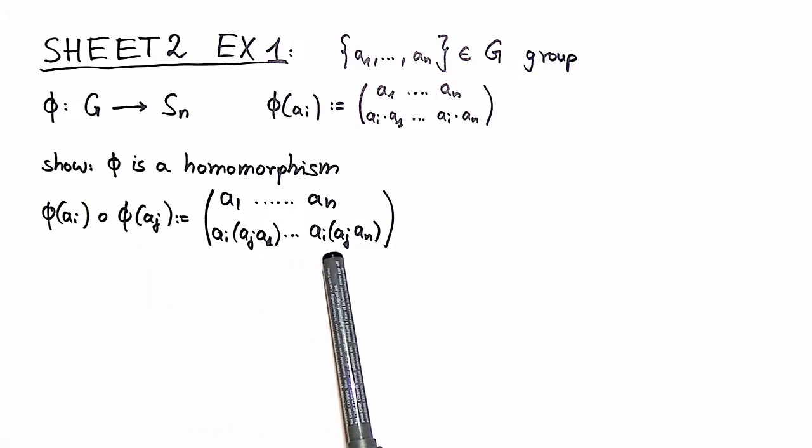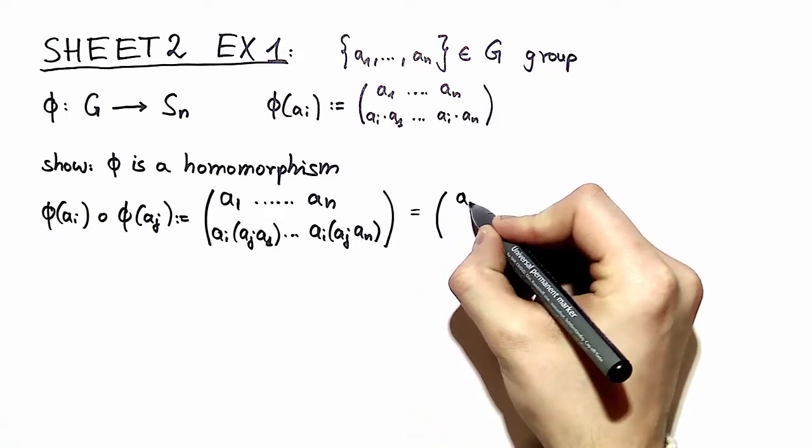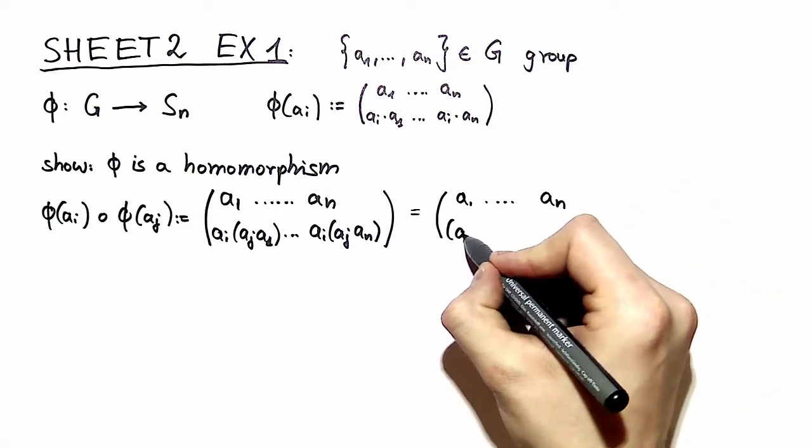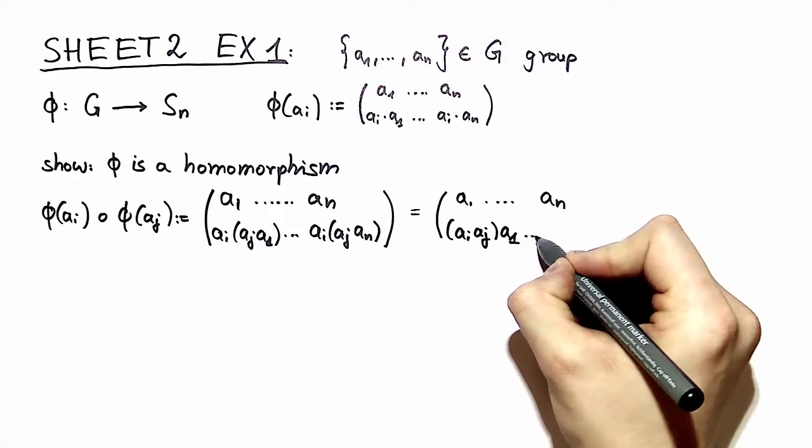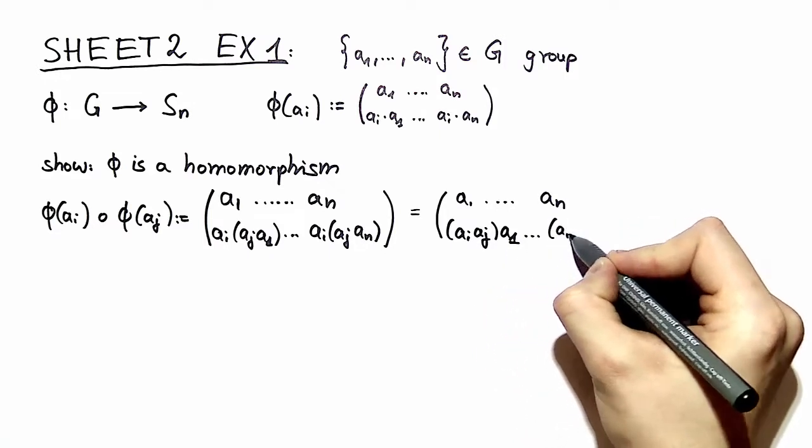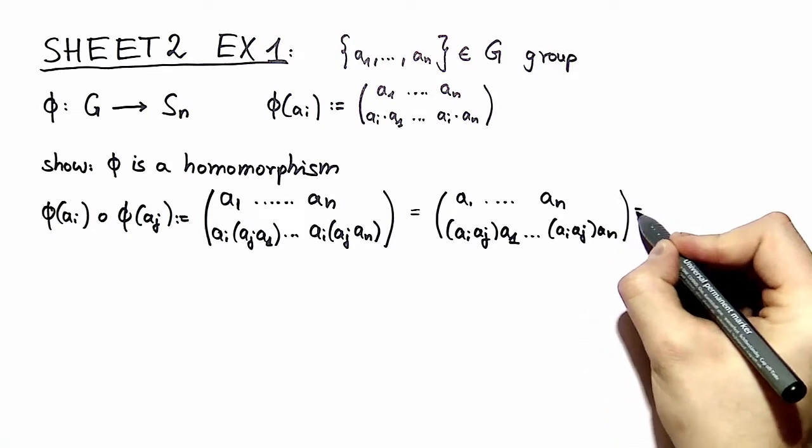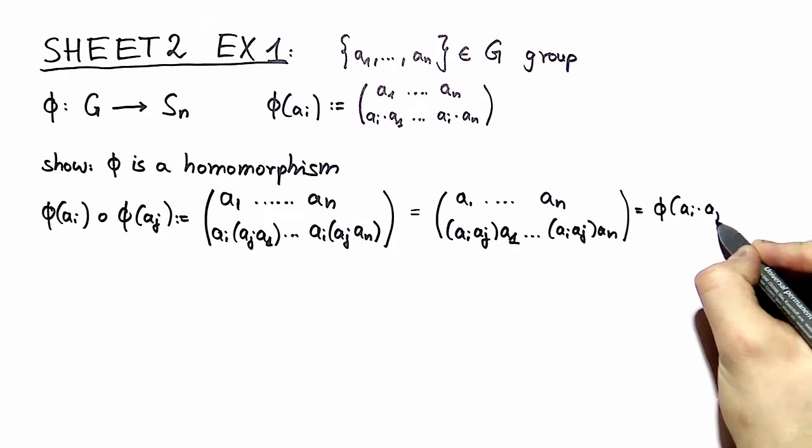We have a very neat definition of the multiplication in our permutation group therefore we can write by associativity of our group that this is exactly just regrouping here our brackets, exactly as what we expected that this is just phi of a_i times a_j.